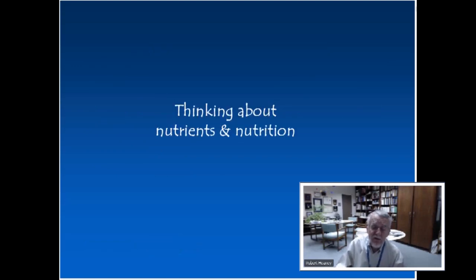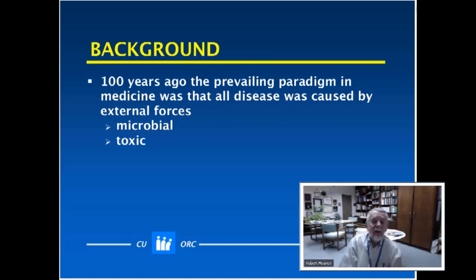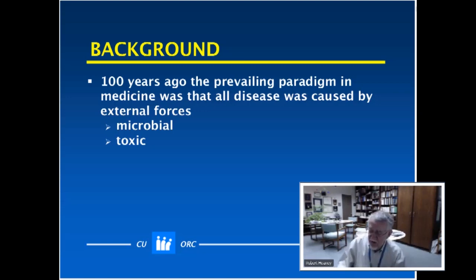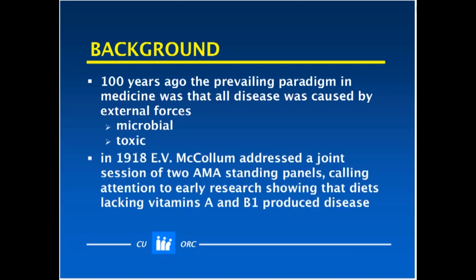First, thinking about nutrients and nutrition, we're going to go back a century. One hundred years ago, the prevailing model or paradigm in medicine was that all disease was caused by external forces — either infectious agents, germs, viruses, or various environmental toxins. But in 1918, E.V. McCollum, who is the father of nutritional biochemistry in this country, was asked to address a joint session of two standing panels of the American Medical Association, and called attention to early research showing that diets lacking what we now know as vitamins A and B1 produced disease.